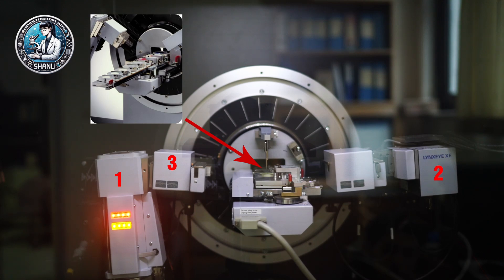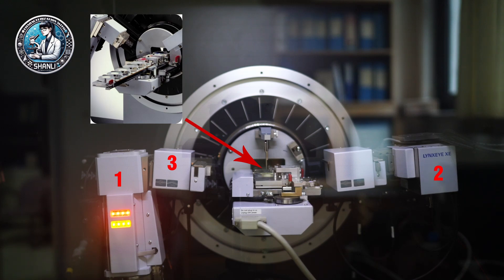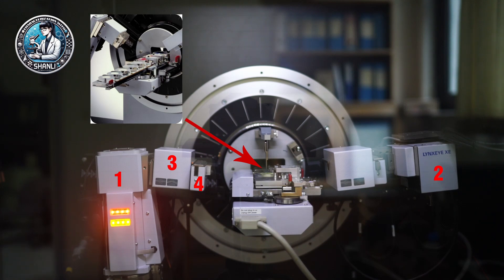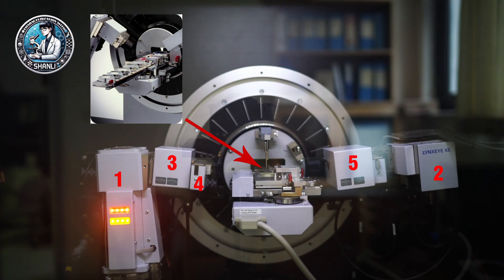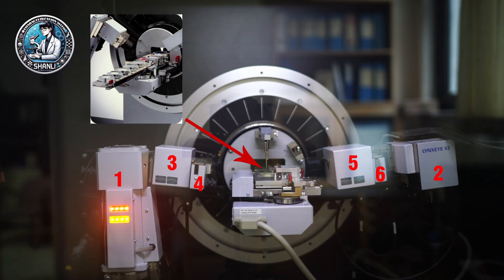The third component is the primary optics, which consists of a Gobel mirror and motorized slits, providing precise control over the incoming X-ray beam in both Bragg-Brentano and parallel beam geometry. Additional components of the primary optics include an incoming slit and an incoming axial soller slit. The secondary optics are equipped with an equatorial soller slit and motorized slits for outgoing beam management. To ensure spectral purity, the system uses a nickel filter to remove K-beta radiation — the higher energy, less useful component of the X-ray spectrum — helping to improve the signal-to-noise ratio and enhancing the quality of diffraction data.